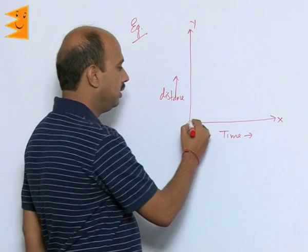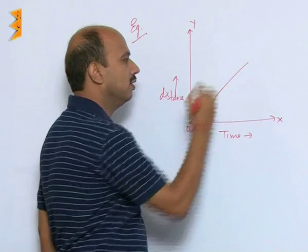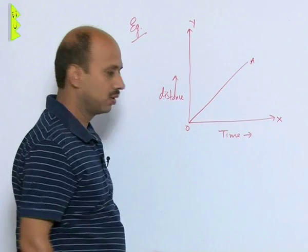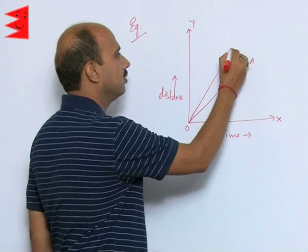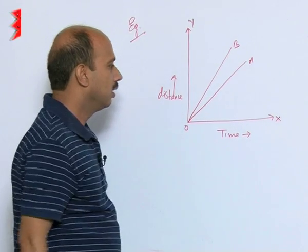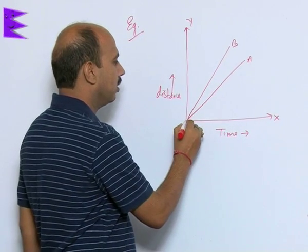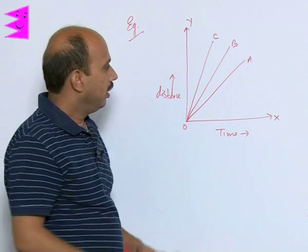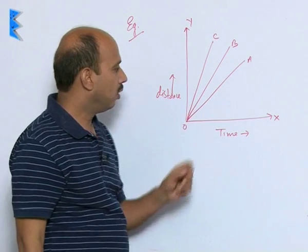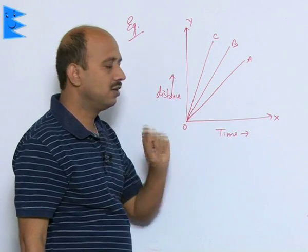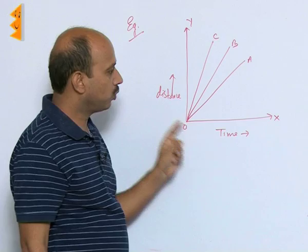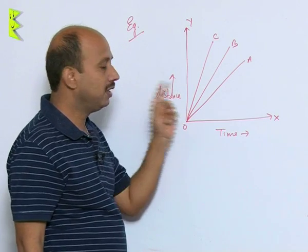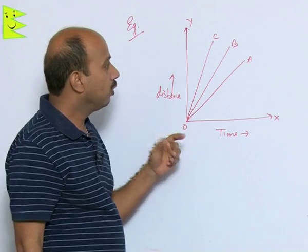Now if you have taken three graphs like this: one is like this, this we can refer as graph A, another is like this, graph B, another we can take here graph C. If you see these three graphs, all these three graphs are a straight line. All these three are showing here uniform motion, that means uniform speed.